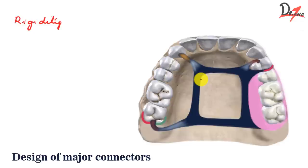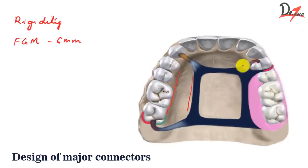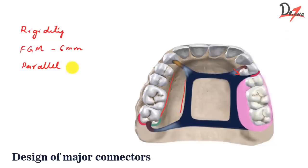The second requirement was that it should not impinge the free gingival margin, because it is a very vascular area. We need to keep the edges at some distance — for the maxillary one it is 6 mm. The borders of the major connector should be parallel to the gingival margin, and if the gingival margin needs to be crossed, it should be at 90 degrees. So: parallel, and 90 degrees.